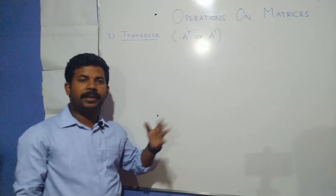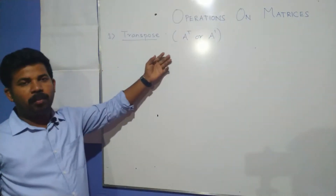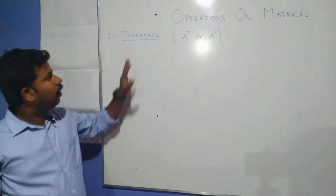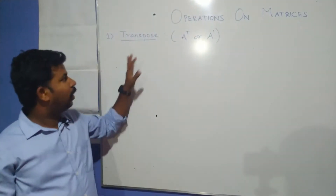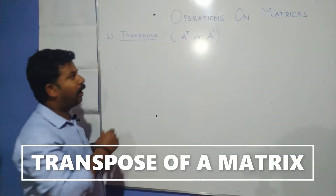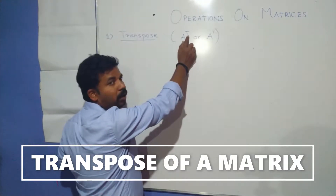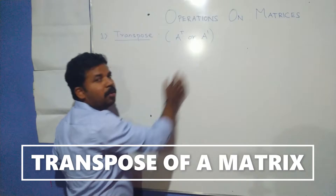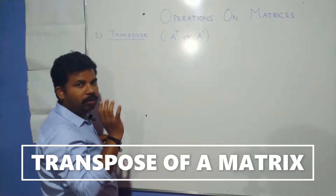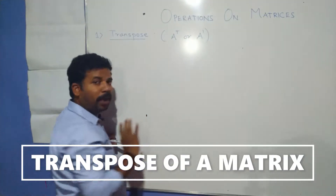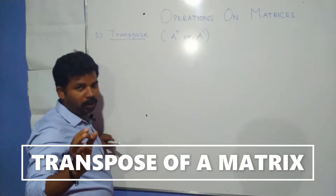Last class we understood what are the types of matrices. Now we will understand what do you mean by transpose of a matrix — one of the operations of matrices. Transpose of a matrix is denoted by writing T at the top, that means A to the power T, or sometimes A power dash. Don't get confused — you should not write A power minus one, as that leads to some other meaning.